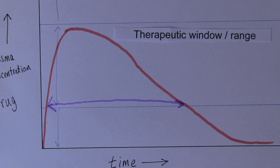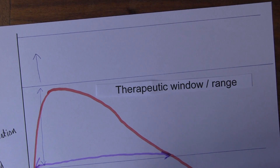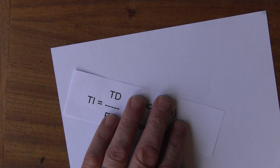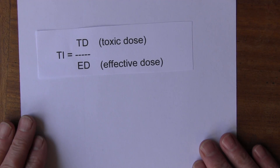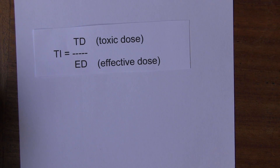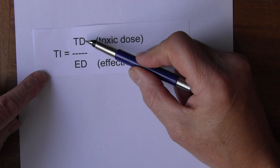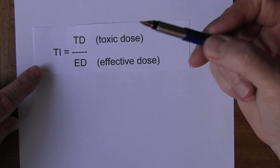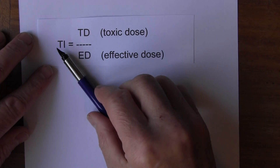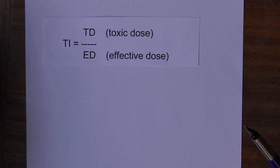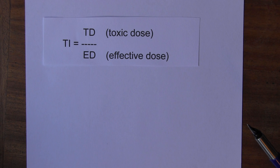Why do we call this a therapeutic index? The equation is: Therapeutic Index (TI) = Toxic Dose / Effective Dose. This gives us the margin of safety of our drugs. So the therapeutic index or therapeutic ratio is the toxic dose over the effective dose — the margin of safety between the effective dose, toxic dose, and lethal dose.